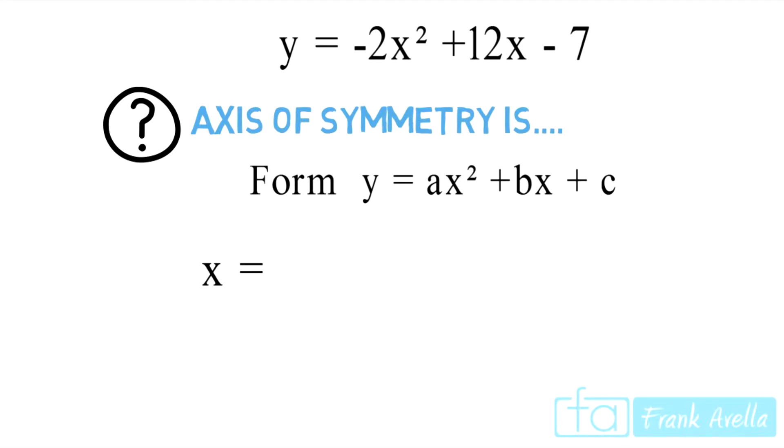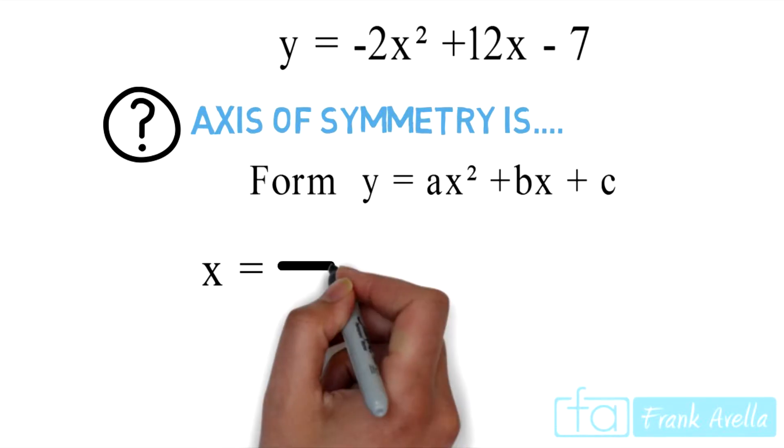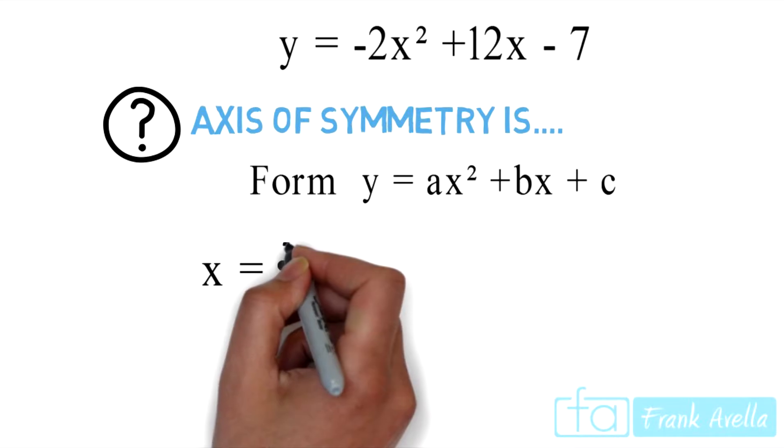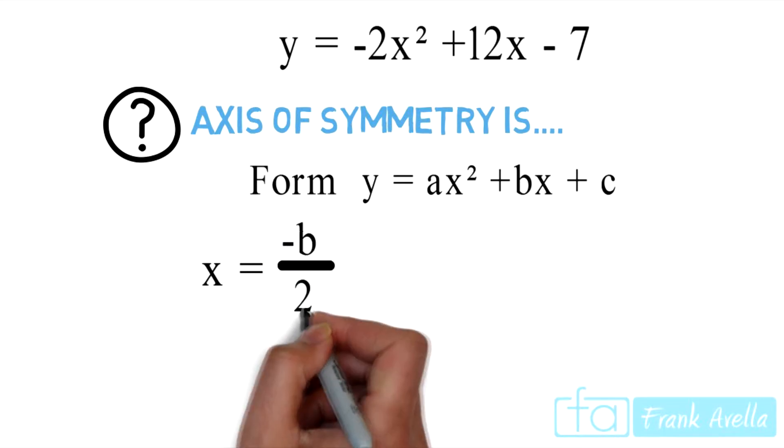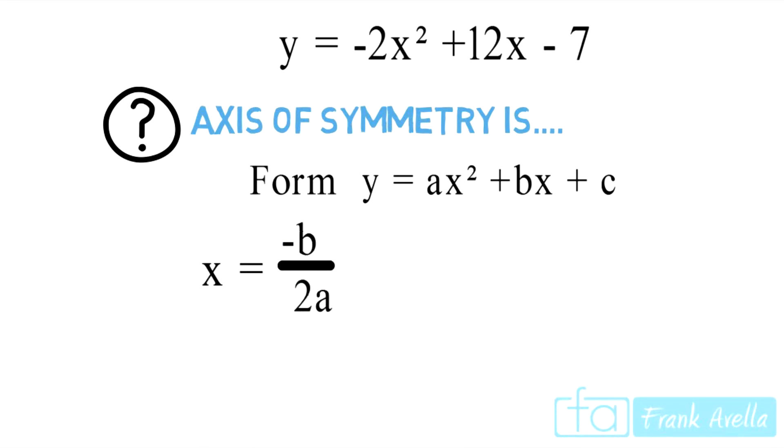To find the axis of symmetry, you're going to use the following formula: x equals negative b divided by 2 times a. That is your formula for finding the axis of symmetry.